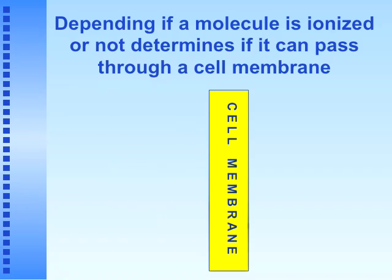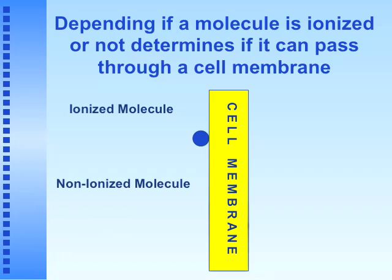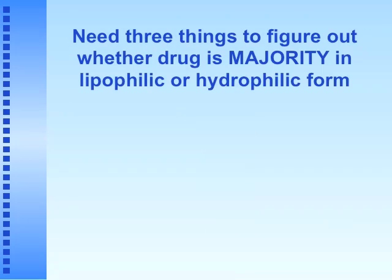Depending on whether a molecule is ionized or not determines if it can pass through the cell membrane. Here's a schematic: an ionized molecule hits the cell membrane and stops right in its tracks. Whereas a non-ionized molecule goes directly through the membrane and into the blood or wherever we're trying to get it to go.